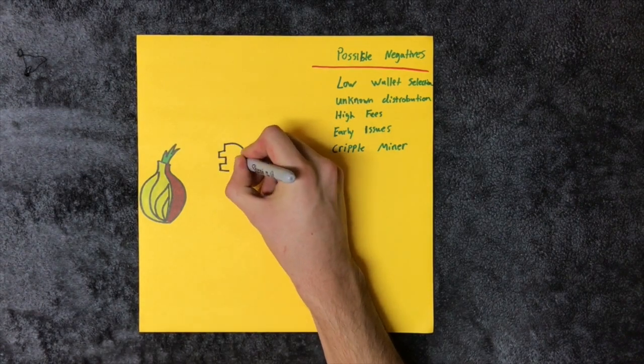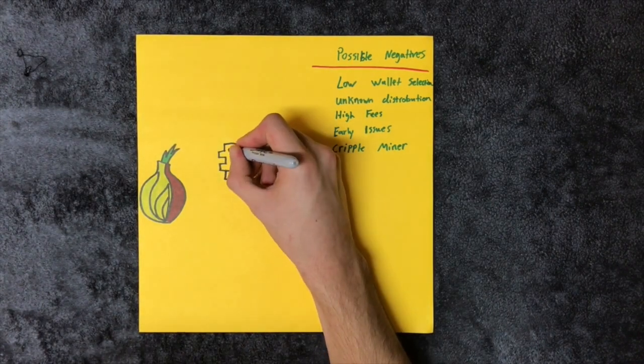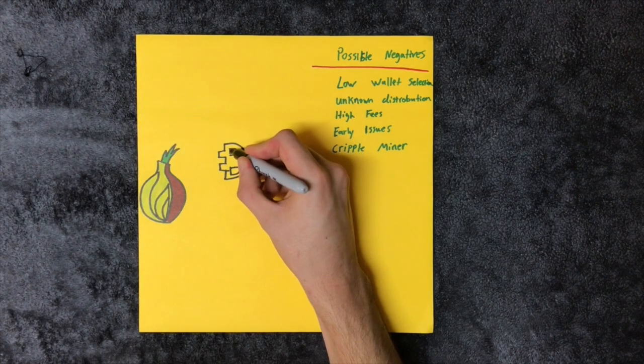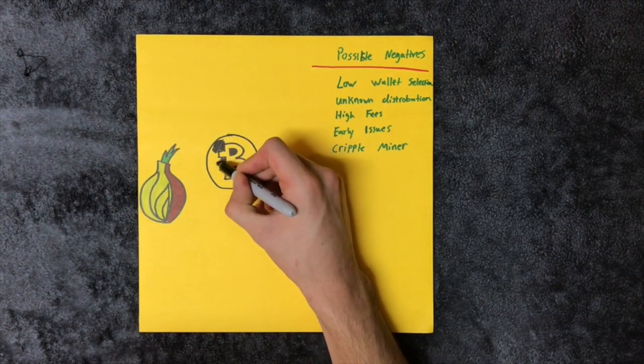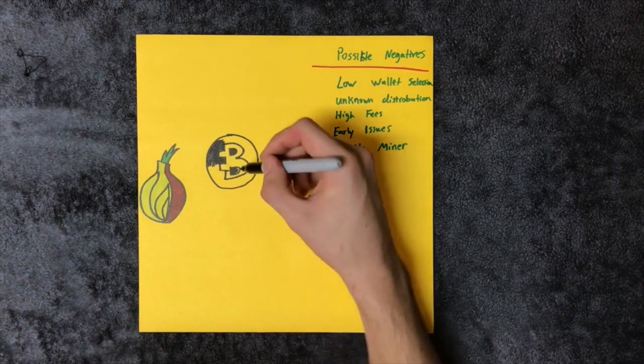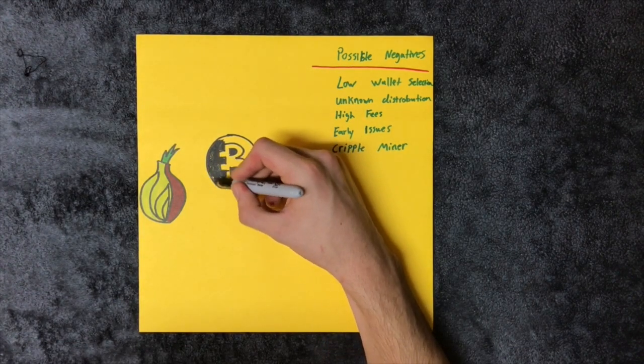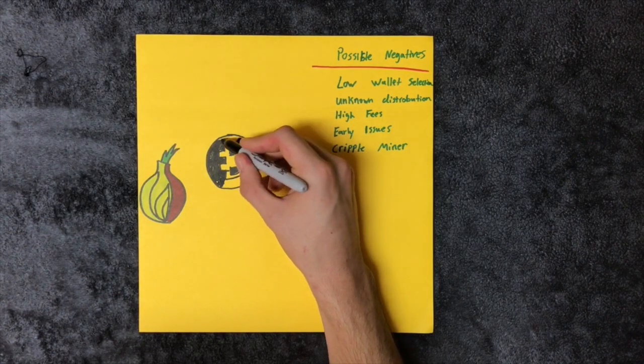Monero was born out of the Bitcoin community. Bytecoin appeared on the Bitcoin talk forums with a suspicious backstory. 80% of the coins were already mined. Bytecoin's creator claimed that it had been mined in underground deep web communities for years, and finally decided to come out to the public.